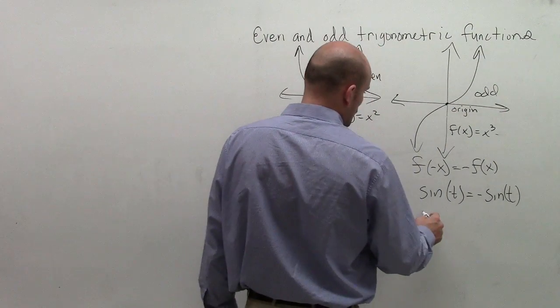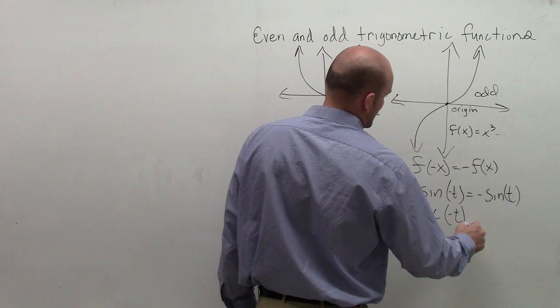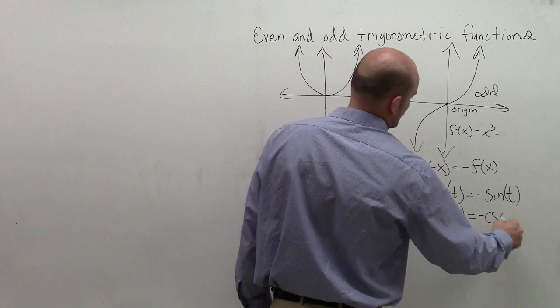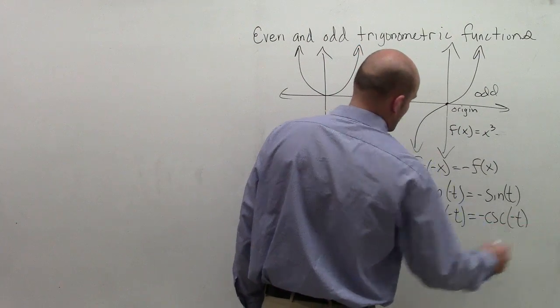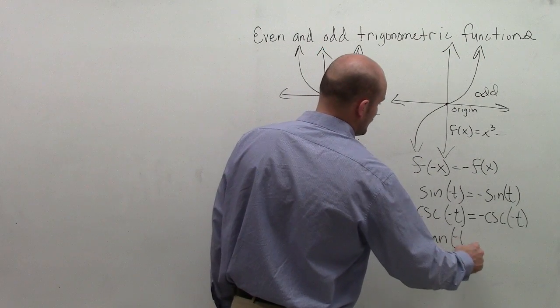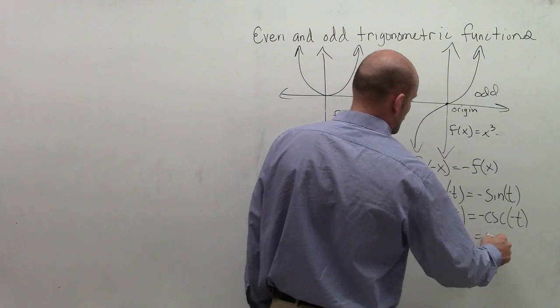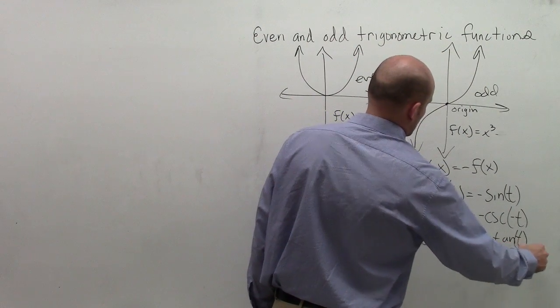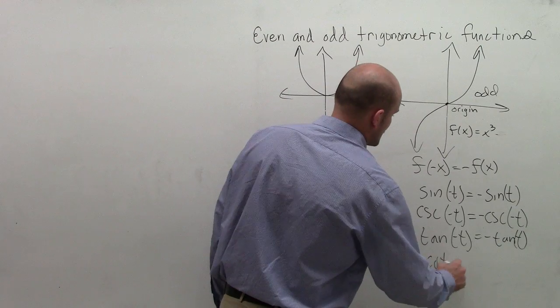And that also works for the cosecant of negative t equals negative cosecant of t. As well, tangent is also negative, and also cotangent.